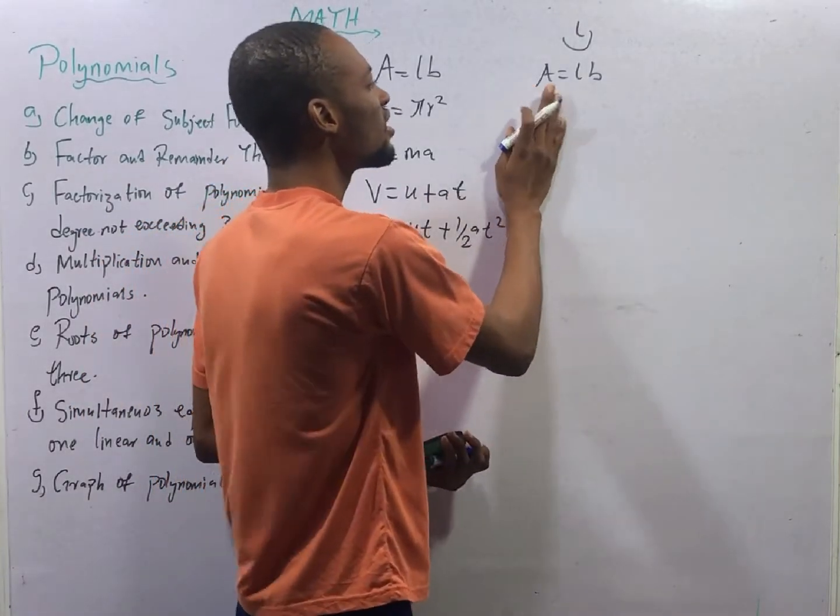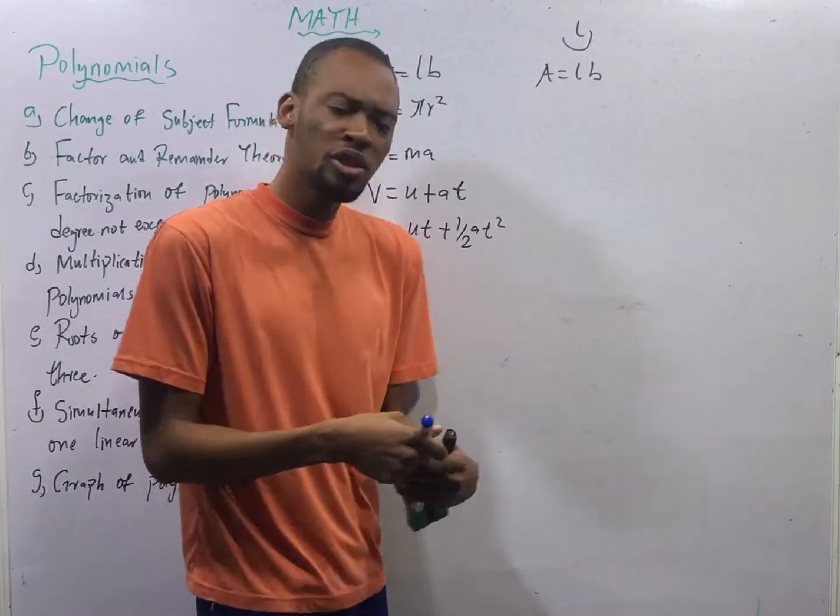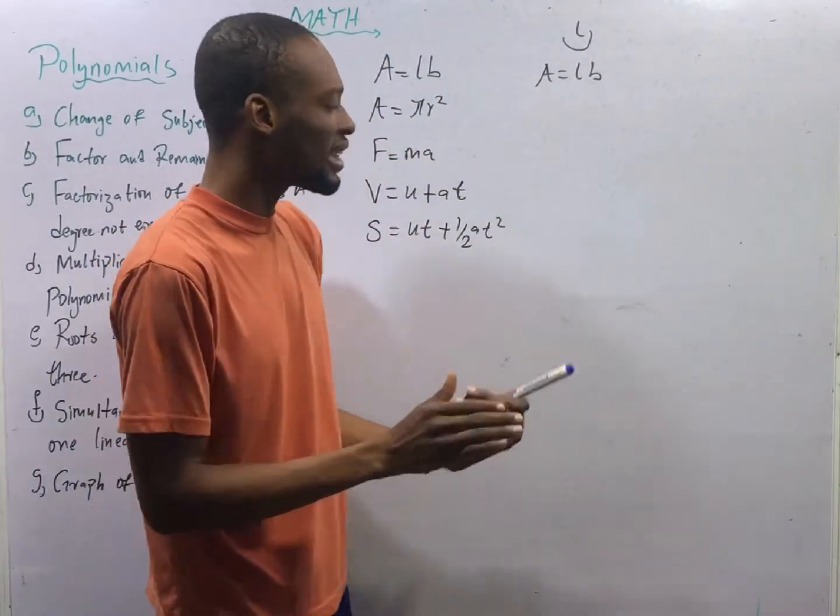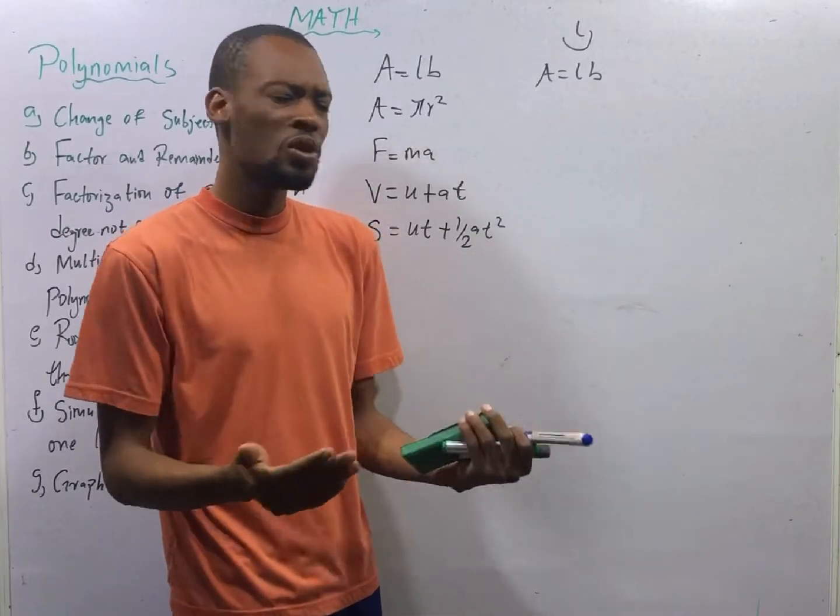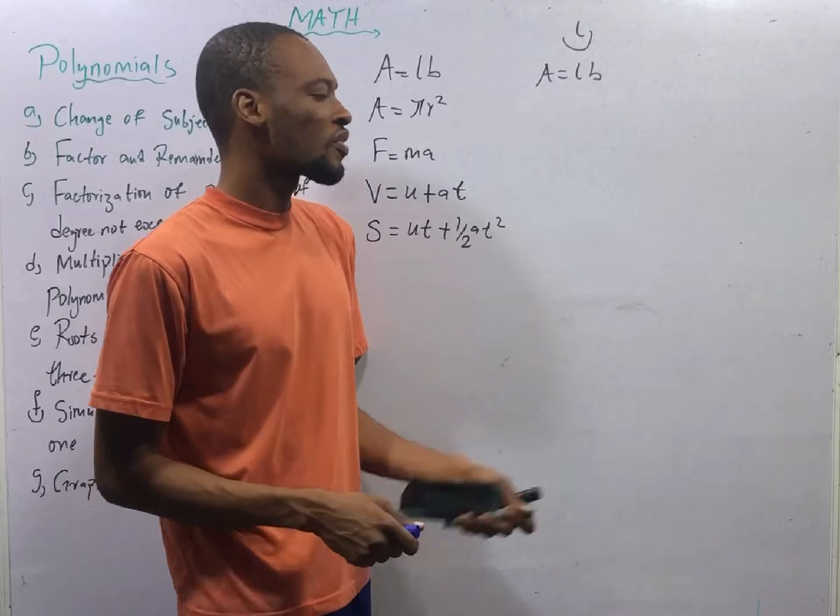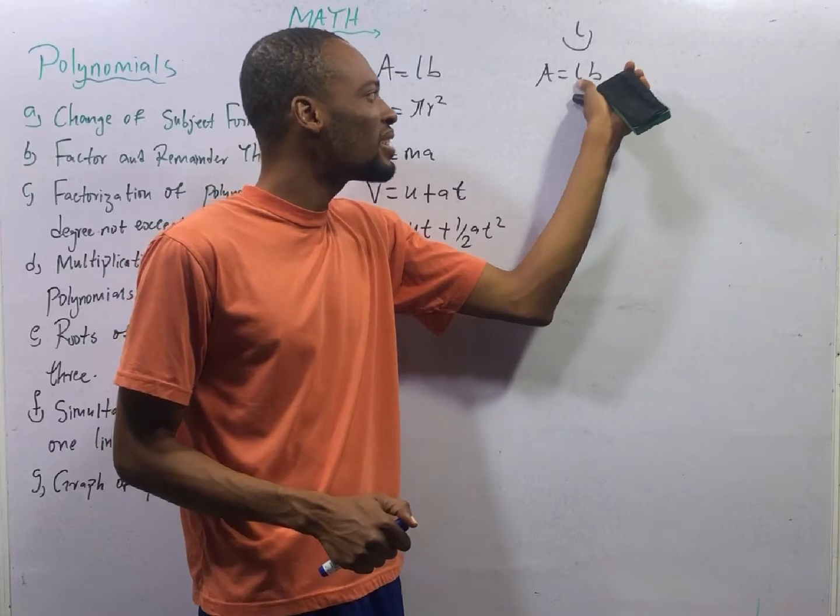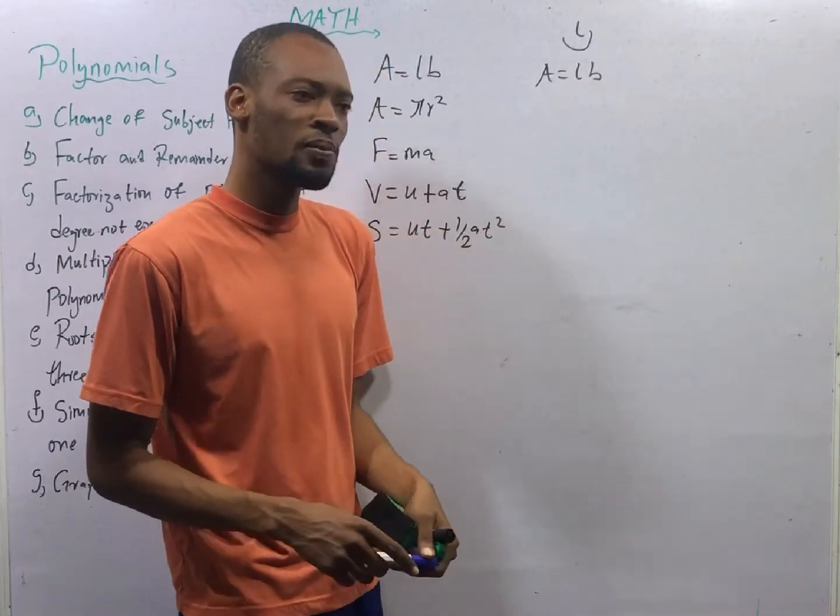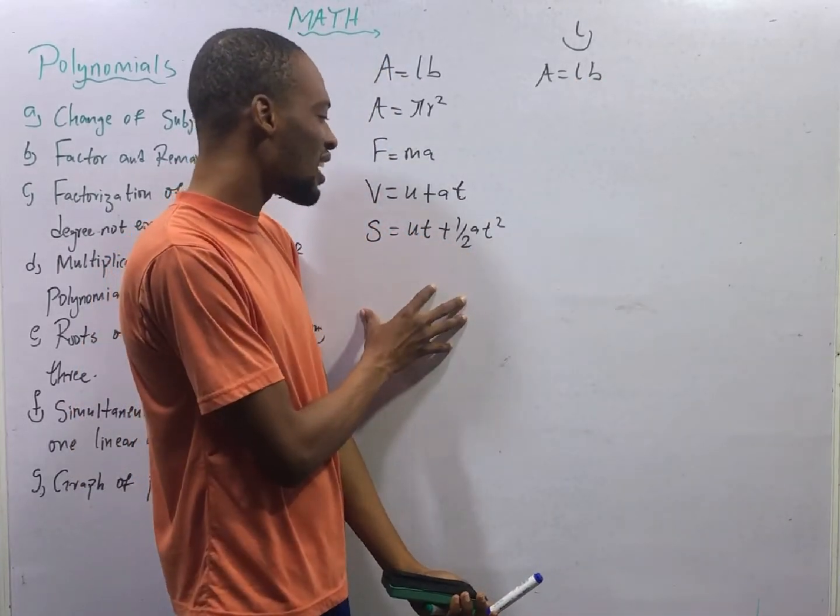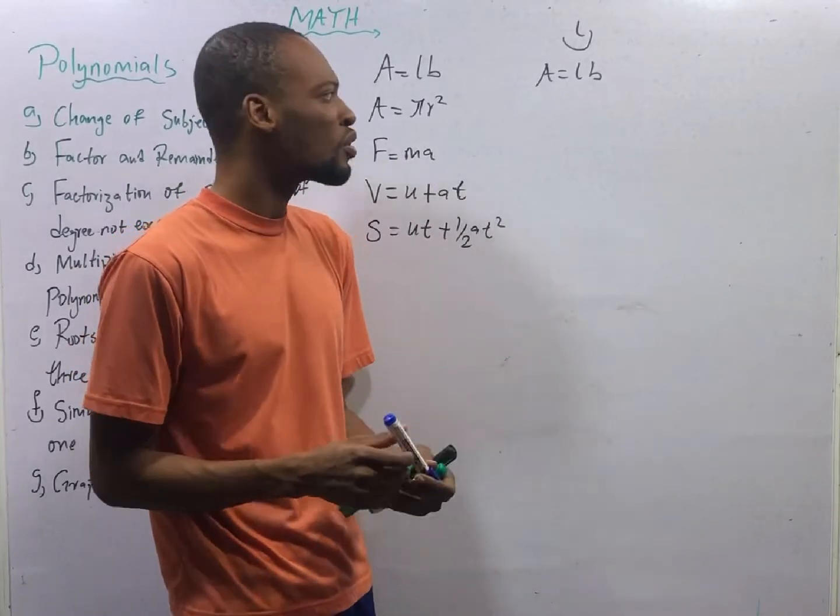This is A equals LB, and we need L. We need to do everything possible to make sure that L stays alone and it equals every other thing. What do we do? What is separating L and B? Because we need L. The thing that is separating L and B is multiplication, and when multiplication is separating things, division should come to your mind.